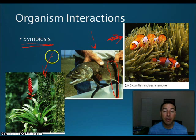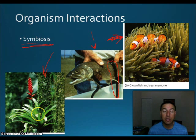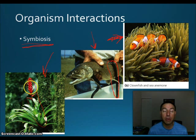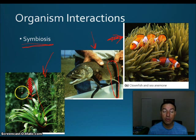The last type is commensalism, where one organism is benefited but the other is neither helped nor harmed. For example, a bromeliad growing on a tree gets a place to grow, but it's not harming the tree, and the tree gets no benefit. The bromeliad is not a parasite — it just grows on the side of the tree and gets its nutrients from the atmosphere that fall into its leaves.